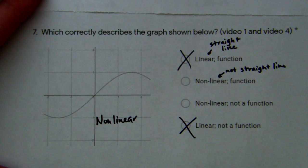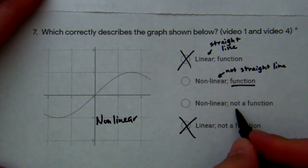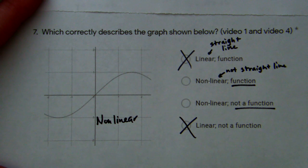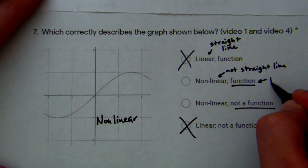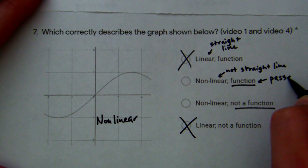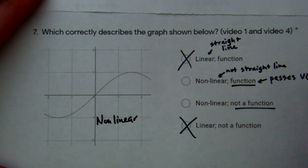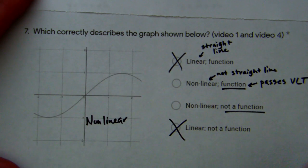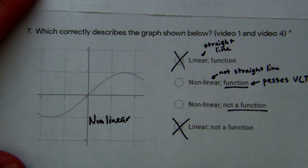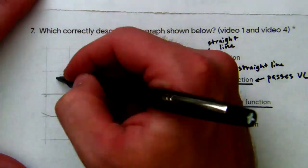So now we have to determine if it's a function or not. We do that by using the vertical line test. If it's a function, it passes the vertical line test. If it's not a function, it does not pass.